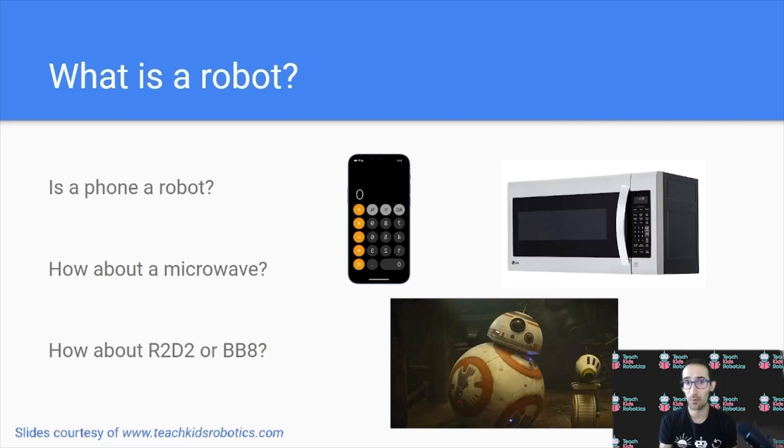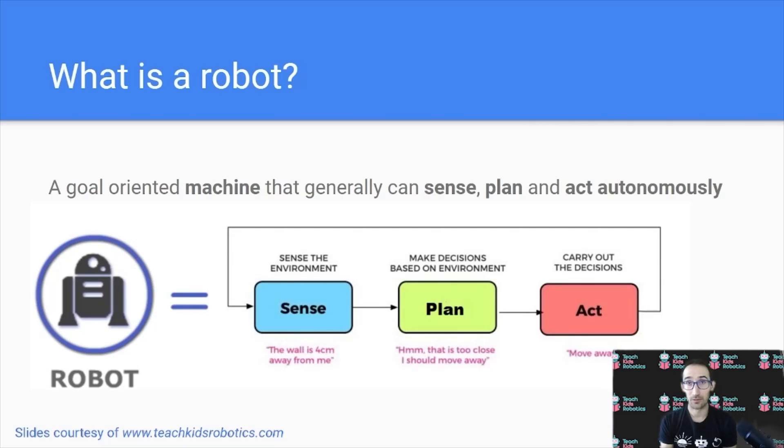To identify what is a robot, we have to first come up with a definition that encompasses a robot specifically. A robot is a goal-oriented machine that can generally sense, plan, and act autonomously.